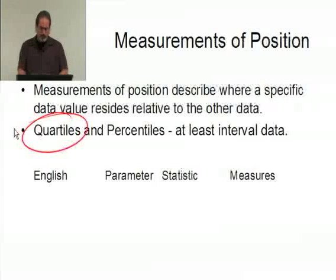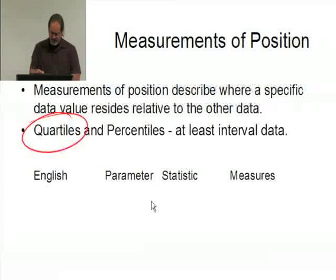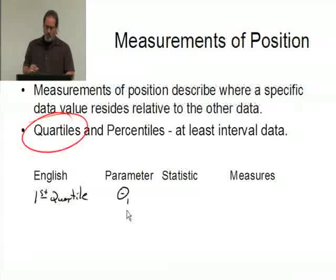First of all, let's talk about quartiles and the notation for it. Now in English we'll make reference to the first quartile. The parameter will be theta, just like it was for the median, only we're going to subscript it with a one, theta one.